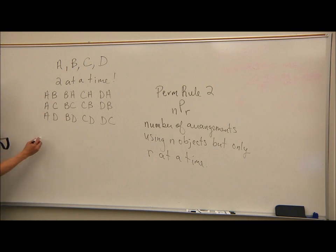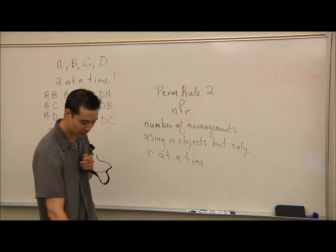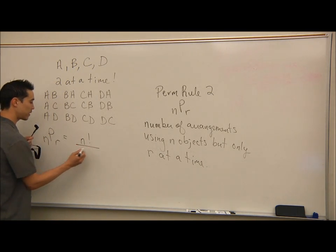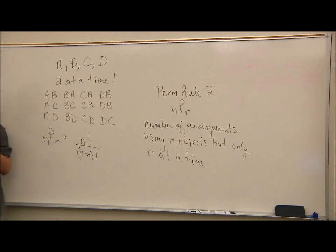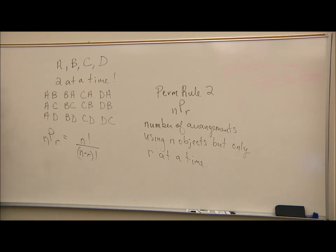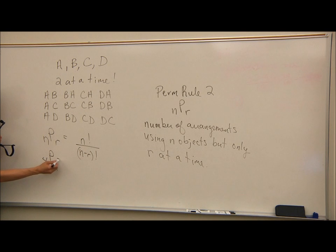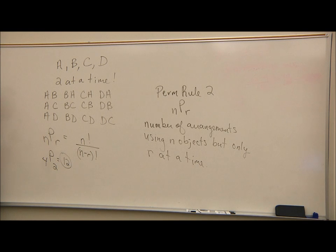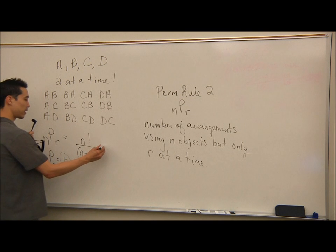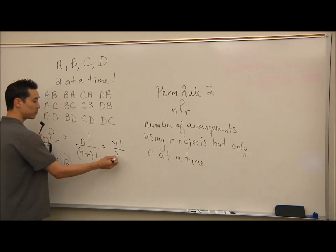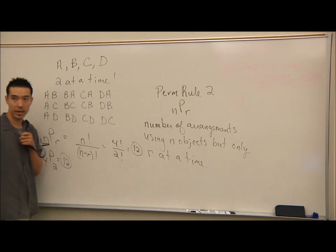The answer is 12, and the formula is N-P-R. You can find this on your calculator. In your calculator, type 4-P-2: hit the 4 key, go to Math, PRB, NPR, then hit 2, and you get 12. The formula is N factorial divided by (N minus R) factorial. Using the long way: 4 factorial divided by (4 minus 2) factorial, which is also 12.